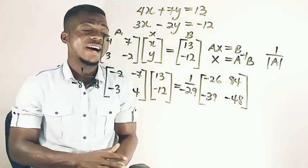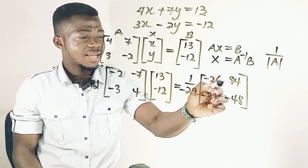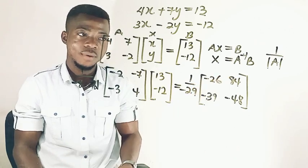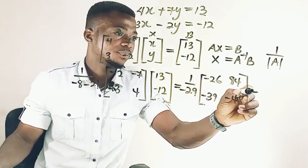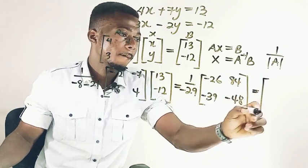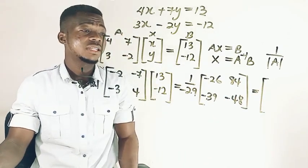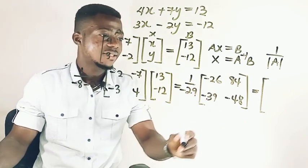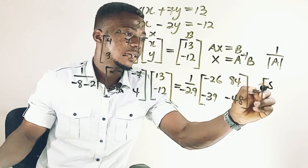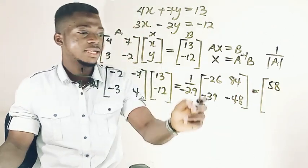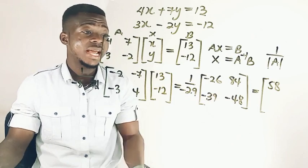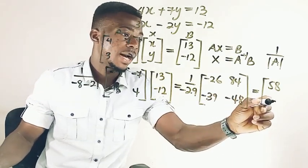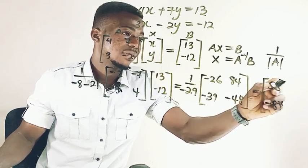So now we're simplifying everything. We just have to do the simple addition and subtraction. So negative 26 plus 84, we're going to have 58. And then negative 39 minus 48, we're going to put them together. We're going to have minus 87.